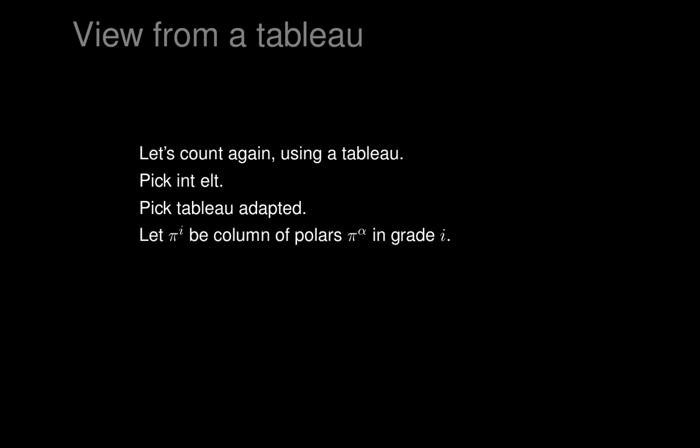Now let's look at our tableau and suppose we had various polars, which we'll call pi alphas, sitting in various grades in the tableau. Gather up the ones that sit in grade i and call them pi_i. So pi_i is a column vector whose entries are one-forms — polar one-forms that arise in our tableau for our exterior differential system. Pi_1 consists of all the polars in grade 1 written down in a column, and so on.